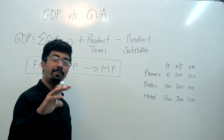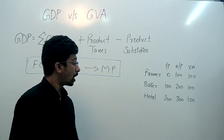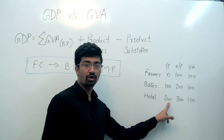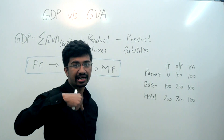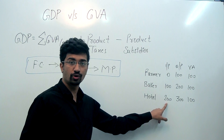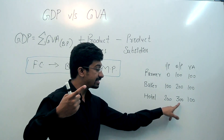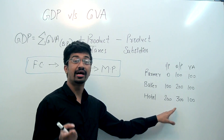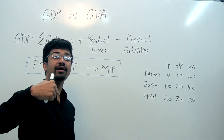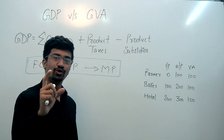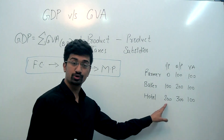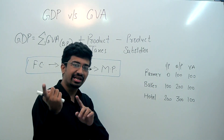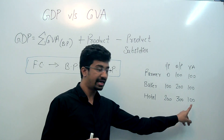Baker से hotel वाले ने 200 रुपए में bread purchase कर ली और उससे dish बना के 300 रुपए में बेची। तो hotel वाले का output 300 रुपए हुआ, मगर value addition केवल 100 रुपए हुआ — 300 minus 200 — क्योंकि 200 रुपए तो उसने baker को pay किए थे।